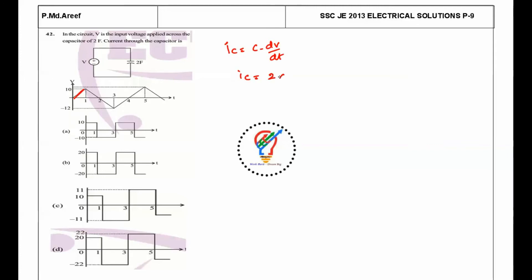C is 2 into dV/dt, the difference is 10 divided by 1, so you get 20 amps for the first case. Next case, from here to here, so IC equals...